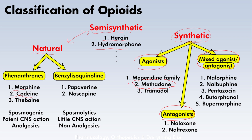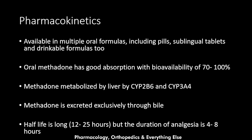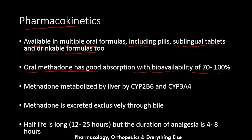Now let's talk about the pharmacokinetics of methadone. It is available in multiple oral formulas including pills, sublingual tablets, and drinkable formulas. All oral formulas have good absorption with a bioavailability of 70 to 100 percent.